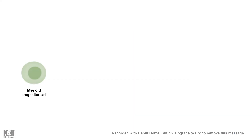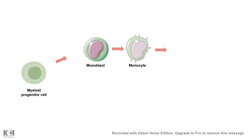The myeloid progenitor can also give rise to monoblasts, which eventually give rise to monocytes. Monocytes enter the bloodstream and circulate throughout tissues, but when they enter a specific tissue they differentiate into macrophages, changing their morphology, physiology, and cellular characteristics. These macrophages are important immune cells — they are antigen-presenting cells and act as local policemen that can mount a rapid immune response.